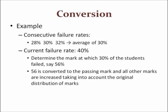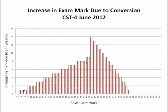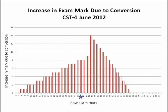The marks around the passing mark are affected more than the very high or the very low marks. This chart shows the actual effect of conversion on the June 2012 CST4 math exam — specifically, by how much a certain CST4 mark was increased as a result of conversion. A mark of 45% increased by 8 percentage points, giving a converted mark of 53%. A mark of 52% increased by 14, giving a converted mark of 66%, and in doing so becoming a passing mark.